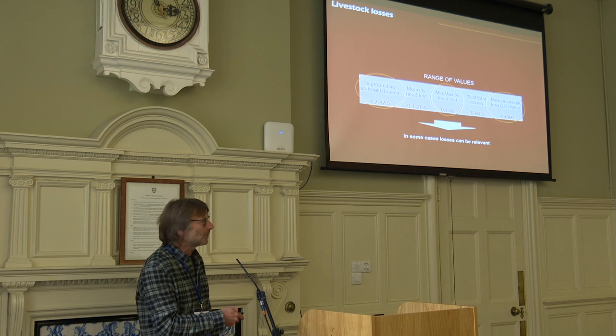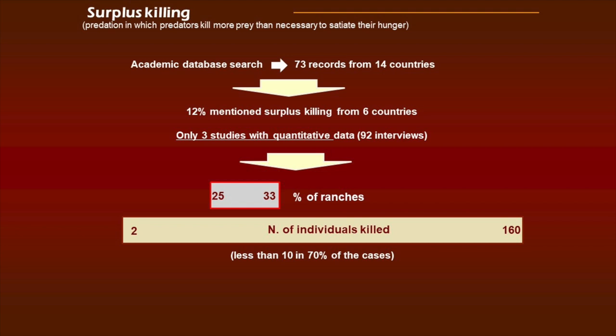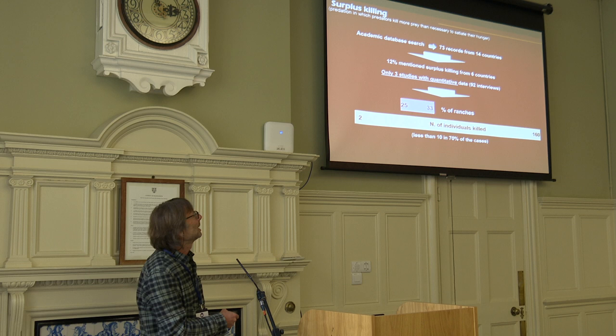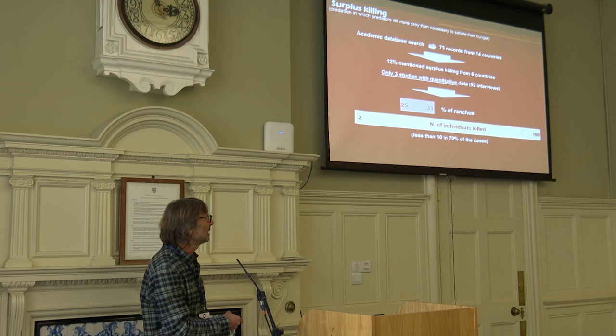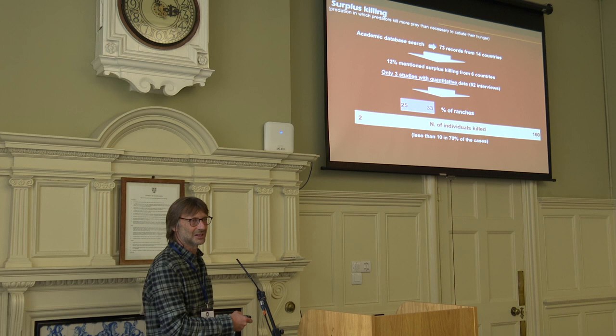This is even worse if we take into account surplus killing, a phenomenon that appears to happen frequently across different carnivore species. It is very little studied, and with pumas it was hard to find reliable information. We were only able to find 12% of records mentioning surplus killing, and we think it is much more widespread than that. Only three studies had quantitative data. Surplus killing appears to affect between 25% and 33% of ranches, and the number of individuals killed can be between 2 and 160 per event.